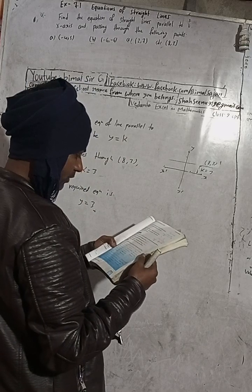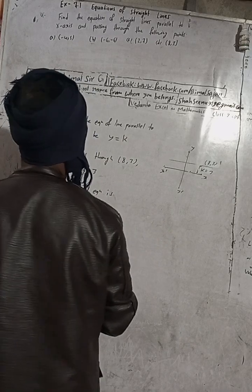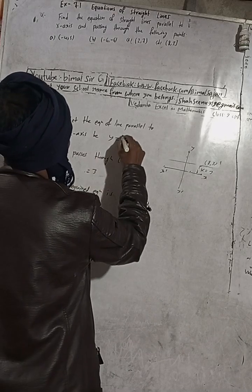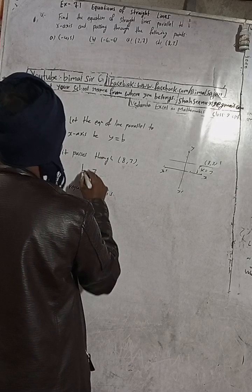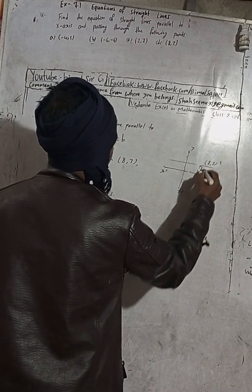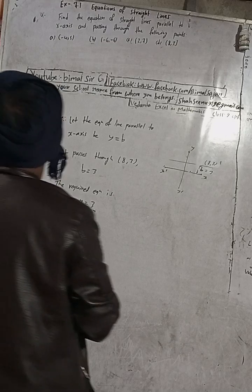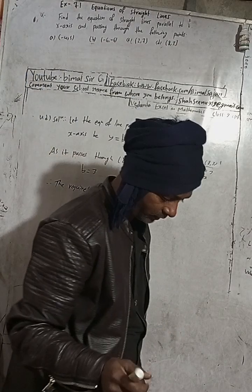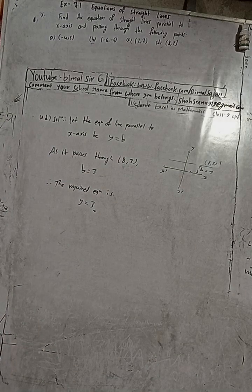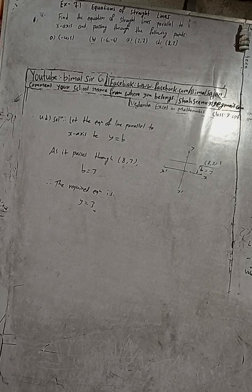y = 3 is the answer for part (d). You can write b instead of k — b is the more commonly used notation, so don't be confused. Dear subscribers, viewers, and students, this is the solution for you. If you have any doubts, comment, otherwise practice and share with your friends.